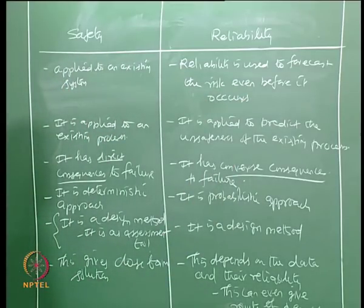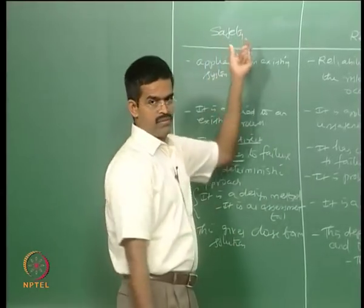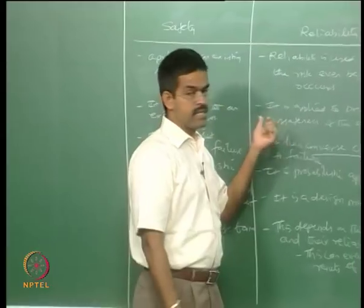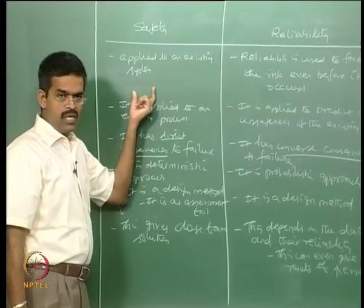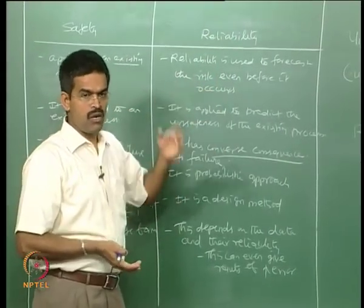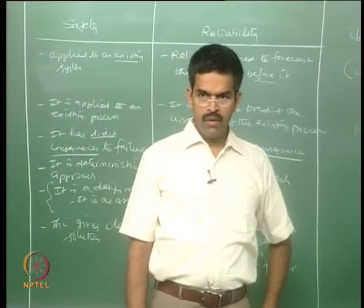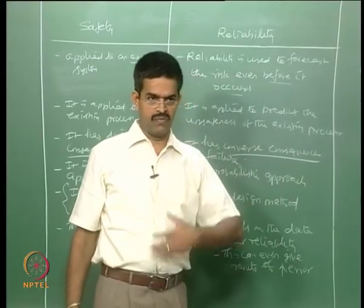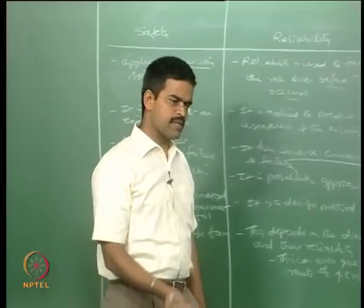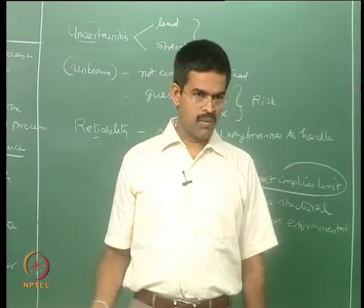If I read a statement saying a structure is safe, I can declare it a non-technical statement. If I say the structure is reliable, I can declare it a technical statement. Safety is related to an existing system under a given process. Reliability addresses the possibility of failure of the system even before any such failure has been recorded. So it is one step ahead of safety — it is marching forward compared to safety.